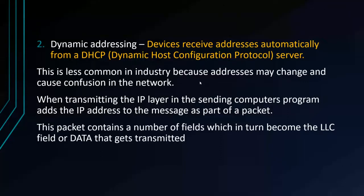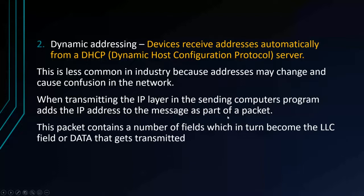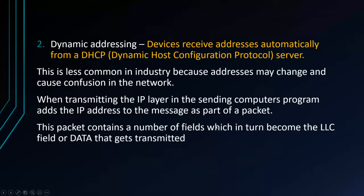When transmitting, the IP layer in the sending computer adds the IP address to the message as part of a packet. What's important to remember as we move through this ILM is that we take specific protocols — whether it's an envelope, bubble wrap, or a box — and add them to Ethernet/IP with an address. That's ultimately how it gets delivered. The packet contains a number of fields which contain the data we want to transmit.